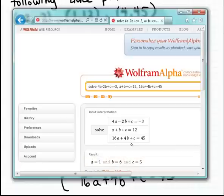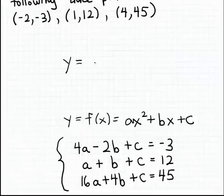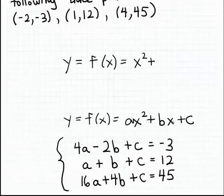Once we know the values for a, b, and c, it's very easy to finish the problem. All we have to do is fill those values into our quadratic function formula. The formula for the parabola that passes through these three points is x squared plus 6x plus 5, since a equals one, b equals six, and c equals five.